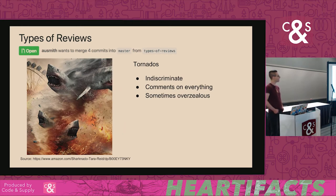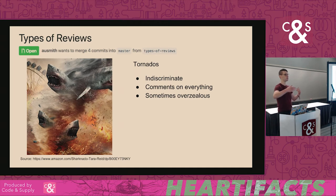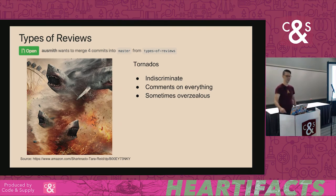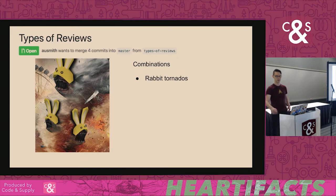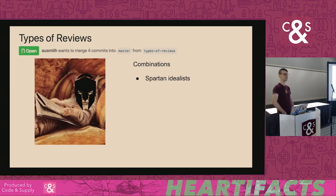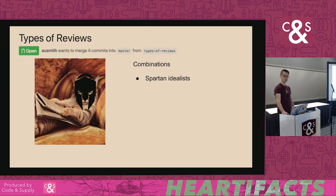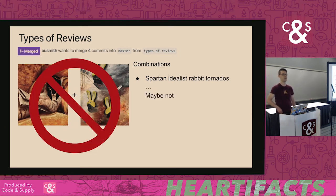Then there's tornadoes — a bit more indiscriminate. When you submit a pull request on GitHub, it will highlight trailing whitespace. Let's say you accidentally did that a bunch of times and a tornado came along and commented on every single one. Sometimes a little overzealous. These are especially entertaining when you start to combine them — like a timid tornado who comments on absolutely everything but without conviction, or Spartan idealists who are too terse to understand and only care about their own solution.